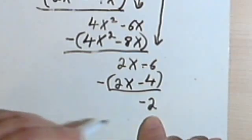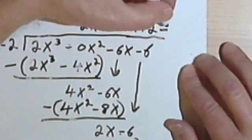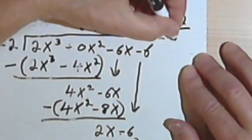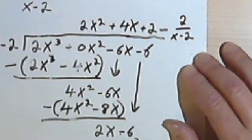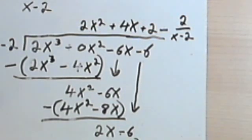And this remainder is going to go up here with the answer. There's the minus sign. And then it's going to be 2 over x minus 2. So now, let's check this.